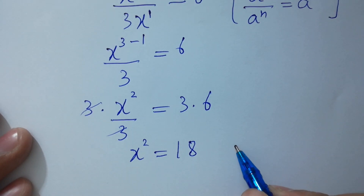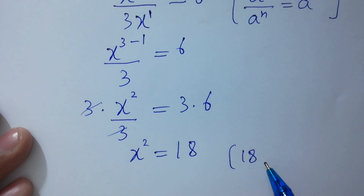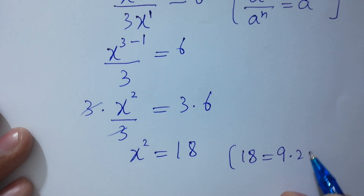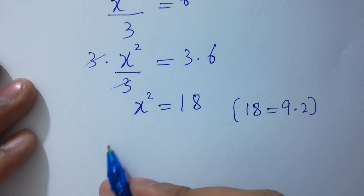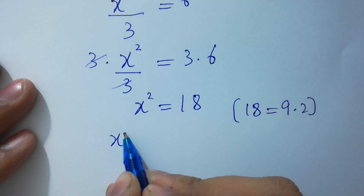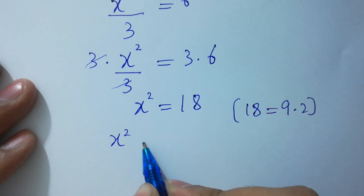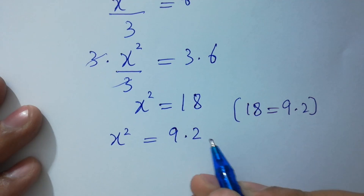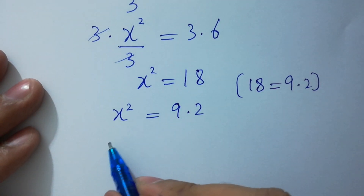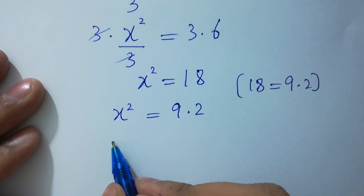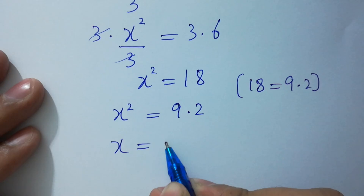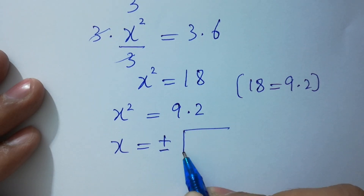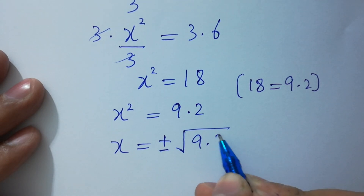Since 18 equals 9 times 2, we have x squared equal to 9 times 2. Now take the square root on both sides: x equals plus or minus square root of 9 times 2.